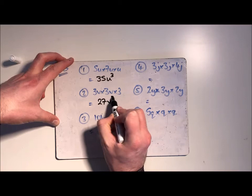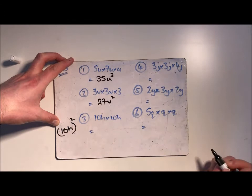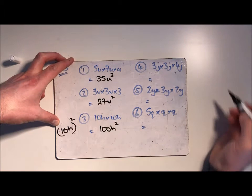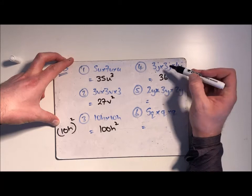Again this one could technically be written as 10h all squared in a bracket if the question said that, that's what it would mean. So that's 100h squared. 3 threes are 9 and then 9 times 4 is 36, and we've got j multiplied by j multiplied by j, so that's j cubed.